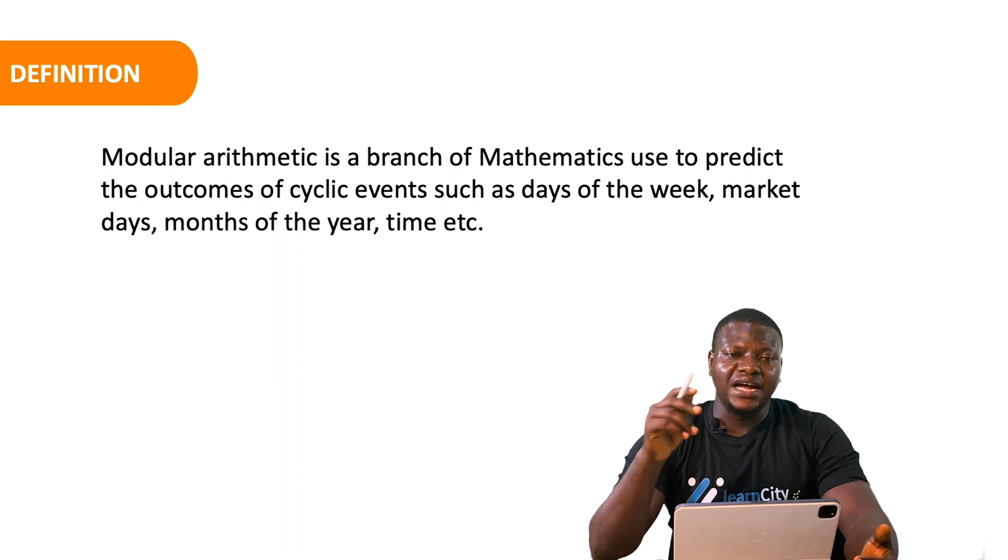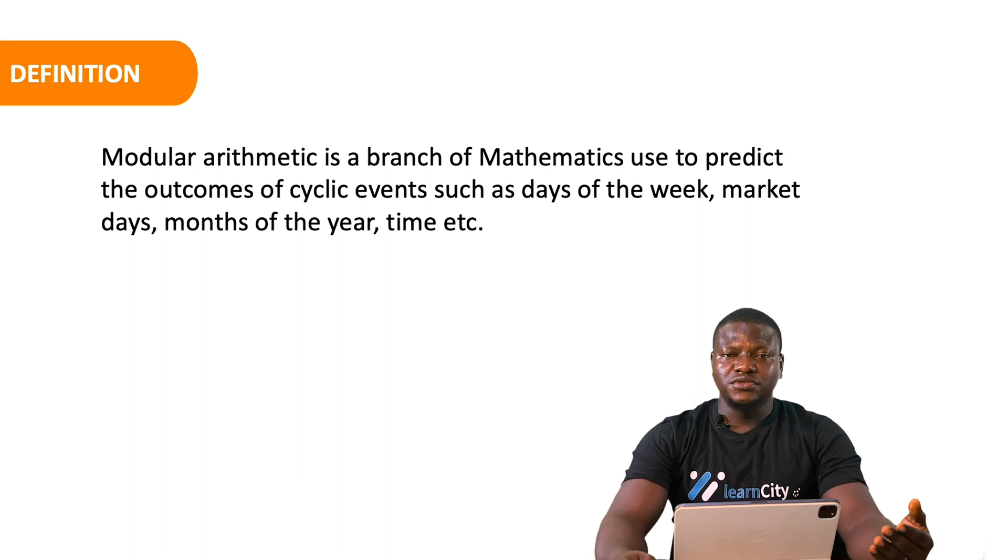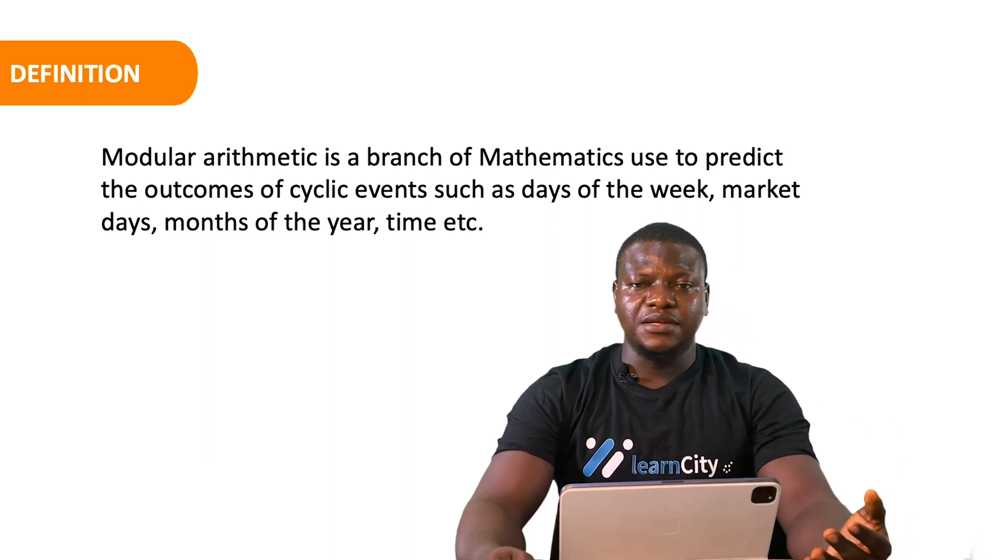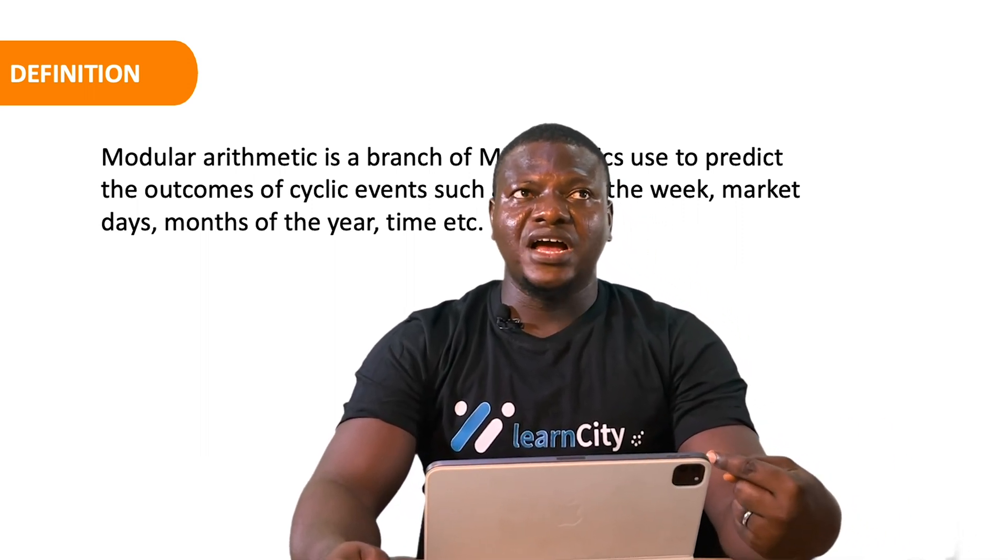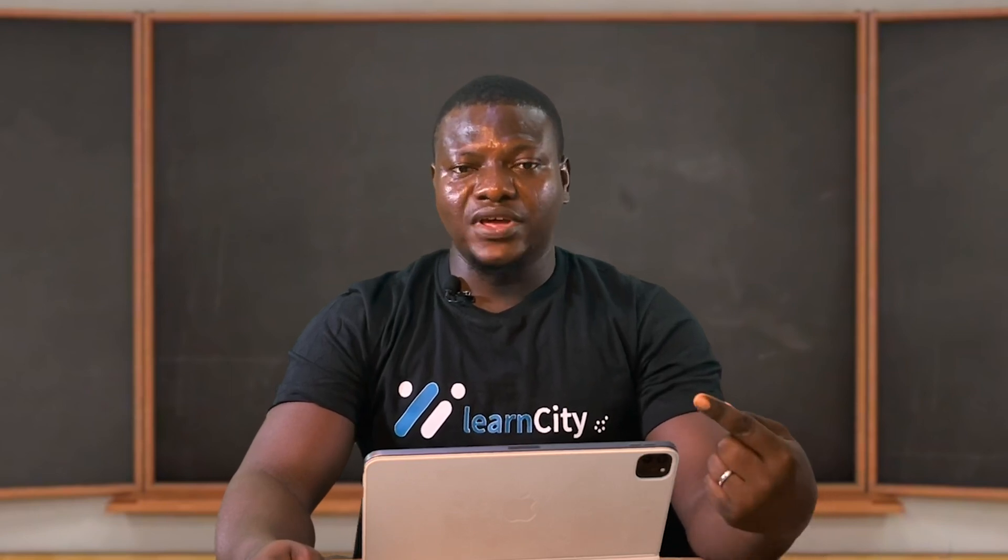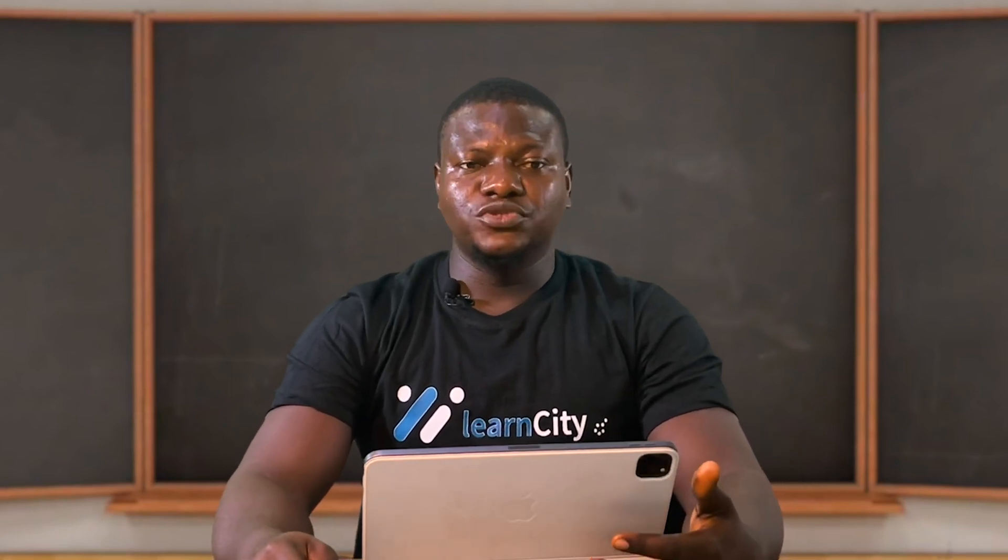Another example is market days. There are some market days that are open in some number of days. You can have a market day that is open every five days or every three days. If a market is open every three days and we're looking at 10 days time, the market will be open about three times before we exhaust that day. Our topic will take us through how to compute those things.